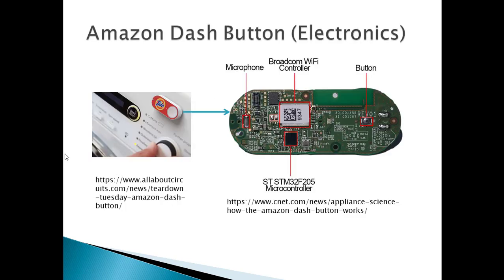Amazon Dash buttons are a great example of microelectronics that fit into a very small device, about 2 inches long. The Dash buttons, when pressed, can initiate an order for a product from Amazon. For example, the image shows an Amazon Dash button on a washing machine. When the button is pressed, an order is automatically placed for laundry detergent.